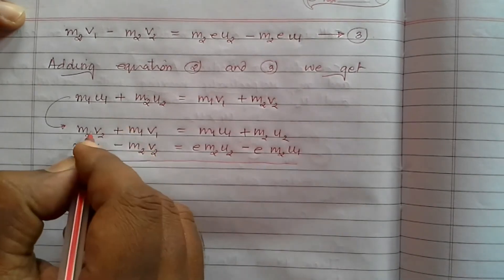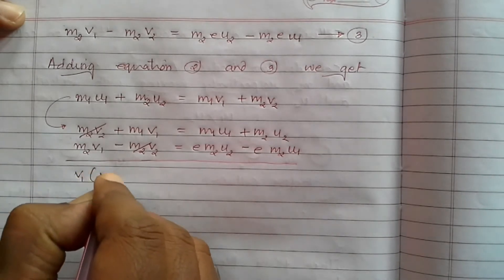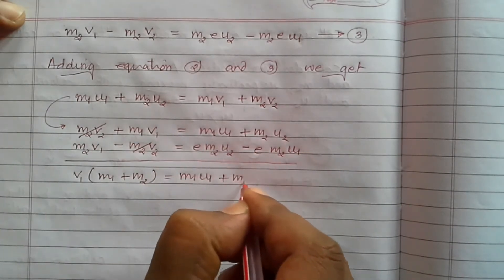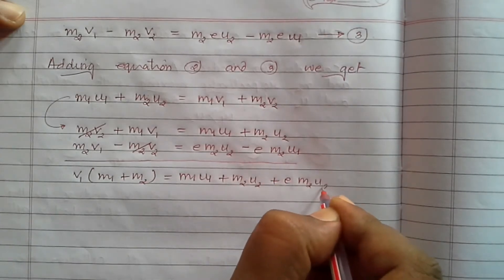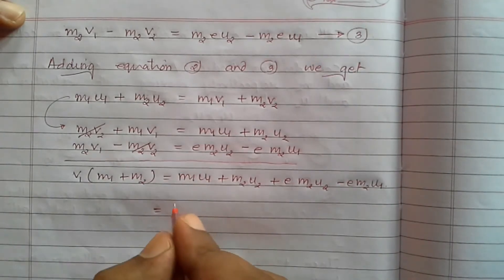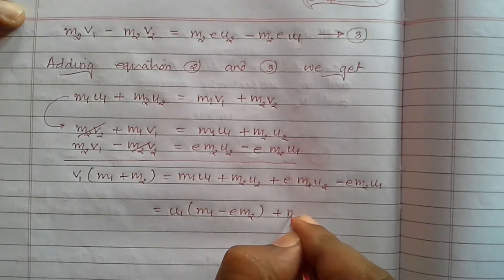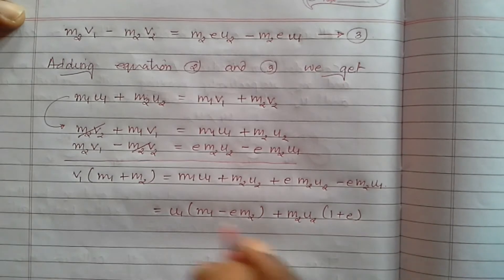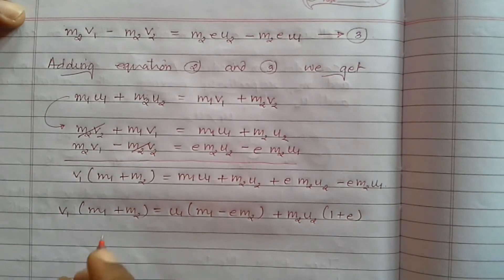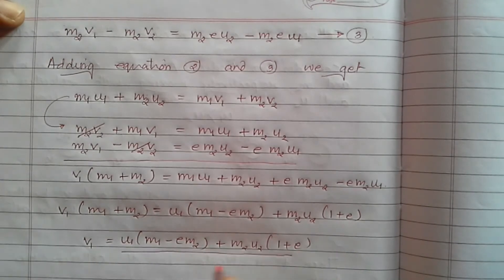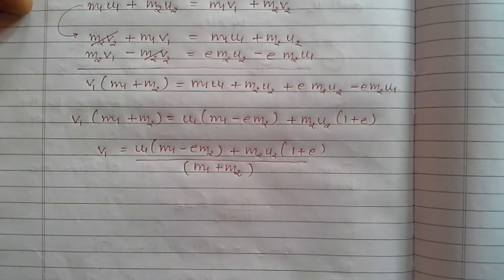Adding Equation 2 and Equation 3: from Equation 2, M1·U1 plus M2·U2 equals M1·V1 plus M2·V2. The M2·V2 terms cancel out, giving V1 times (M1 plus M2) equals M1·U1 plus M2·U2 plus e·M2·U2 minus e·M2·U1. Simplifying, V1 equals [U1·(M1 minus e·M2) plus M2·U2·(1 plus e)] divided by (M1 plus M2). This is the final velocity of mass M1, Equation 4.